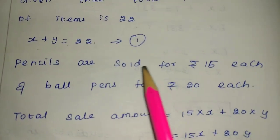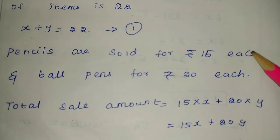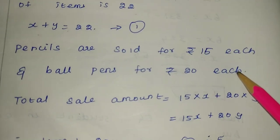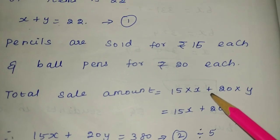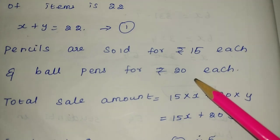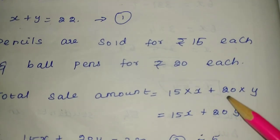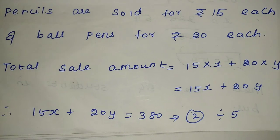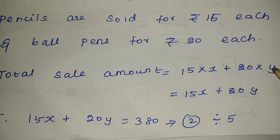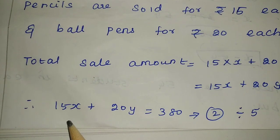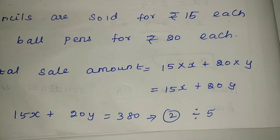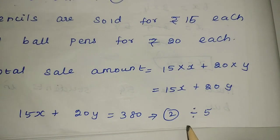Next, pencils are sold for Rs.15 each and ball pens are sold for Rs.20 each. The total sale is Rs.380. So, 15x plus 20y equals 380. This is the second equation.